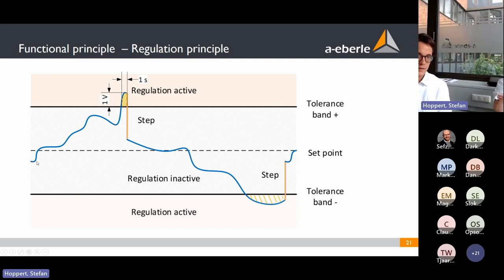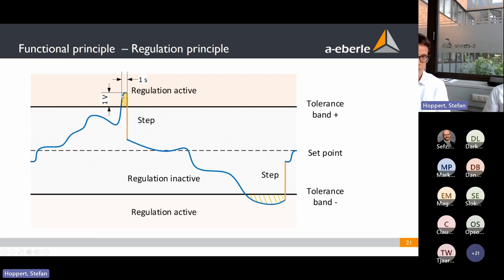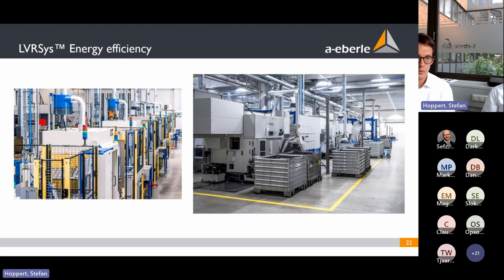The regulation principle: the blue line shows the fluctuating voltage. When it goes above the tolerance band, the system steps down; when it goes below, it steps up. The regulation speed — how long it takes per step — is a configurable parameter, set at 1 volt per second by default. Standard parameters work well for most applications without any additional configuration.